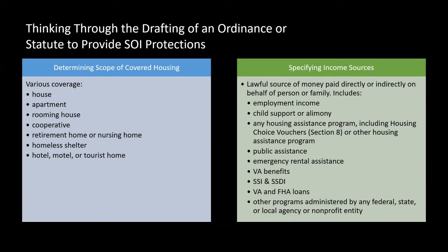Another factor is specifying the income source. Virtually all ordinances say it must be a lawful source of money — a good requirement. It can include employment income, job support, and alimony. Spell out housing assistance programs including vouchers. Our two draft ordinances on our website make sure to specify Section 8. Someone suggested not specifying it to help it pass, but I always say go through the front door — if the intent is to have Section 8 covered, put it in the ordinance. Don't leave it up for confusion later. Have the discussion upfront before any statute or ordinance gets adopted.